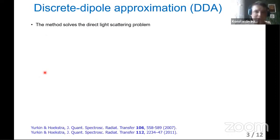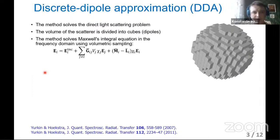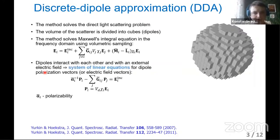Discrete dipole approximation, ADDA, solves the direct light scattering problem. The volume of the scatterer is divided into cubes or dipoles. The method solves Maxwell's integral equation in the frequency domain using elementary sampling. Dipoles interact with each other and with external electric field. So we have a linear system for dipole polarization vectors or electric field vectors.